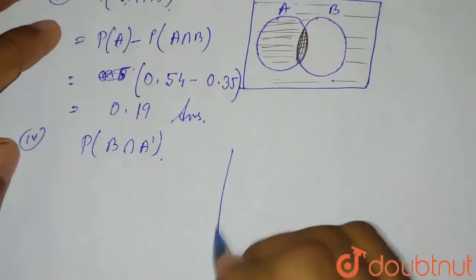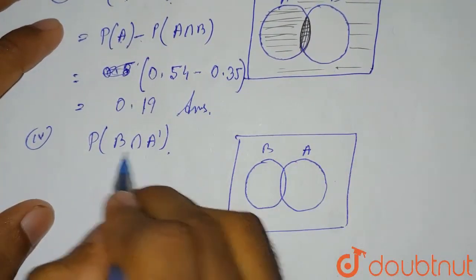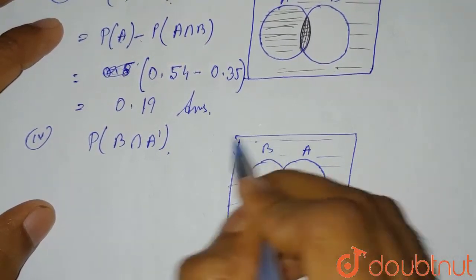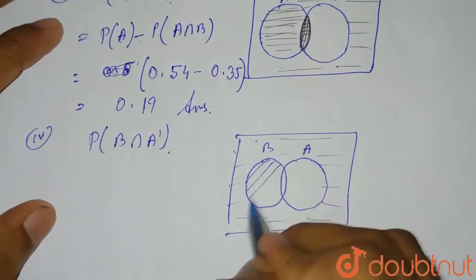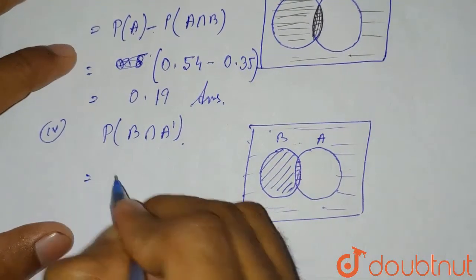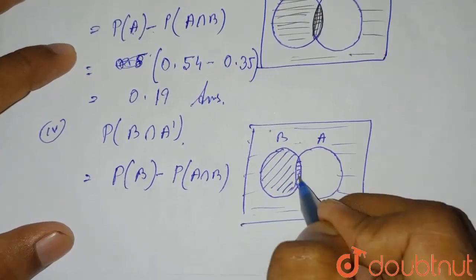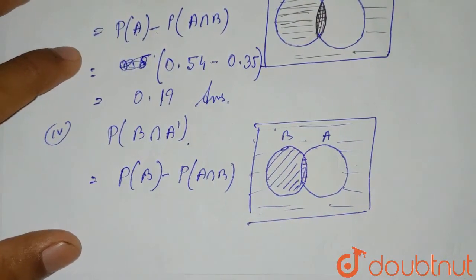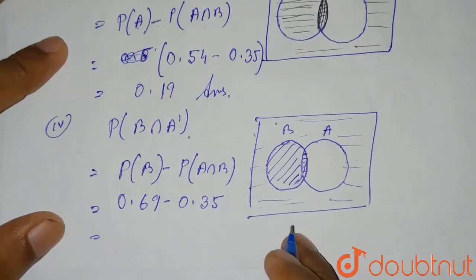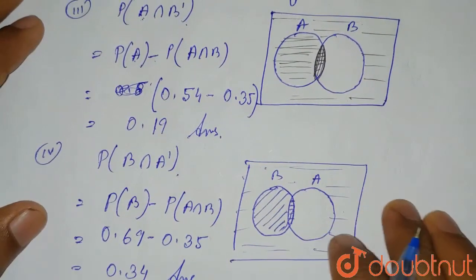Drawing the Venn diagram: we find the region of B where there is no A, which is B minus the intersection strip. So P(B∩A') = P(B) − P(A∩B) = 0.69 − 0.35 = 0.34. This is the fourth answer. We have now calculated all four answers for this question.